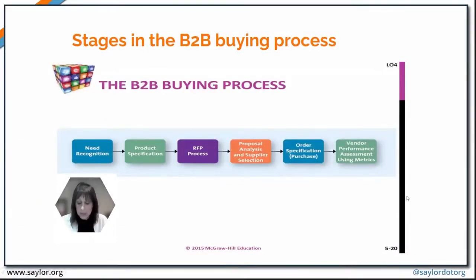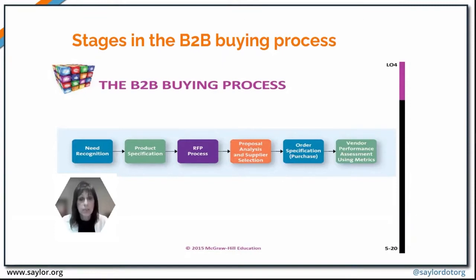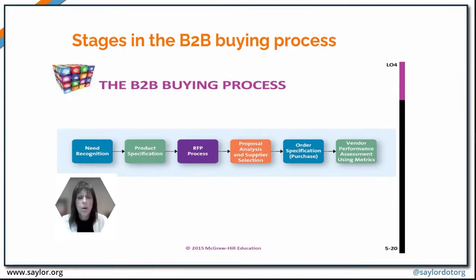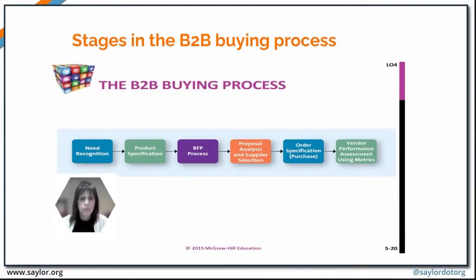The B2B buying process starts similarly to the consumer decision process with need recognition, but that's where it really diverges into a completely different process. Once there is a need recognition, the next step is to define and quantify the need, where the product specifications are identified — which can be much more complex for an organization.